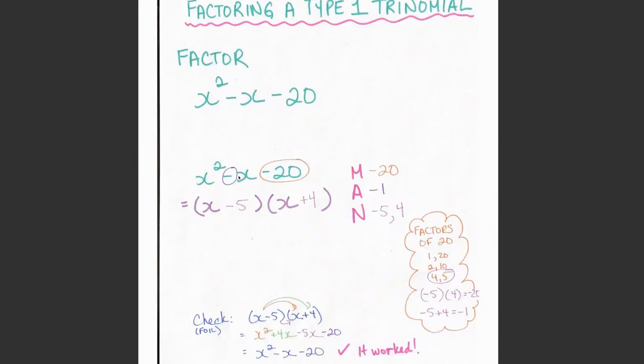And I want to find two numbers that will add to my middle term, because I know when I'm simplifying this, when I go in the other direction, I'm going to add together those two middle terms. So my middle term has to add to -1. I need to find two numbers that multiply to -20 and add to -1.